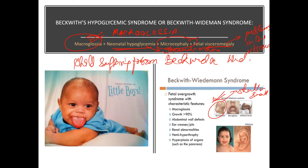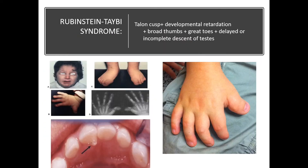Microcephaly — skull is small — and fetal visceromegaly. There are problems in the viscera: the intestinal part and stomach part. So fetal visceromegaly is also a feature of Beckwith-Wiedemann syndrome.